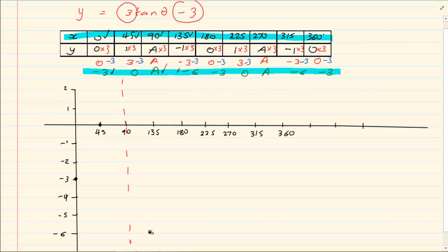135 and minus 6. Then we have 180 and minus 3. We have 225 and 0. And we have an asymptote again. Then we have 315 and minus 6. And we have 360 and minus 3.